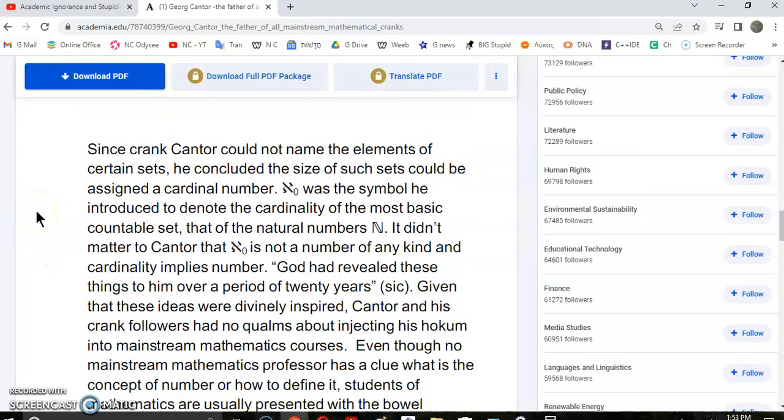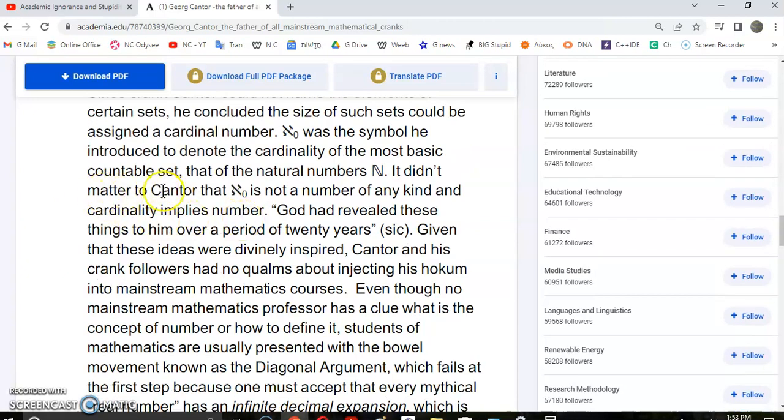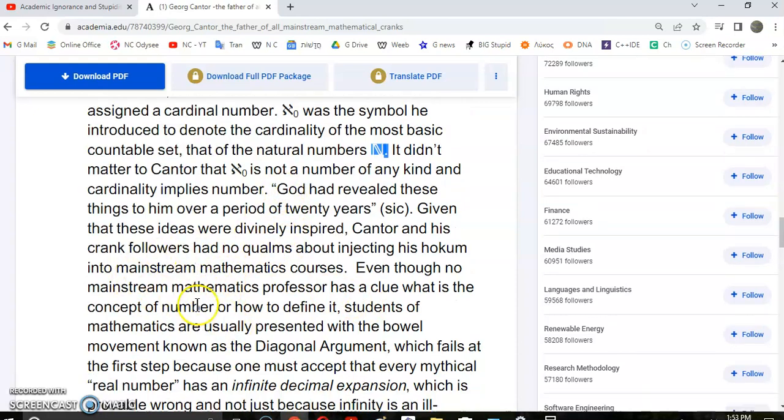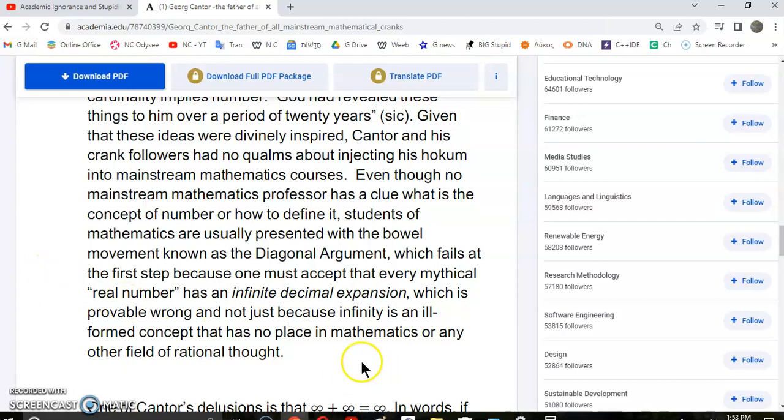Since crank Cantor could not name the elements of certain sets, he concluded the size of such sets could be assigned a cardinal number. Aleph-zero was the symbol he introduced to denote the cardinality of the most basic countable set, that is the natural numbers. It didn't matter to Cantor that aleph sub zero is not a number of any kind, and cardinality implies number. He simply believed that he was divinely inspired and that God had revealed these things to him over a period of 20 years.